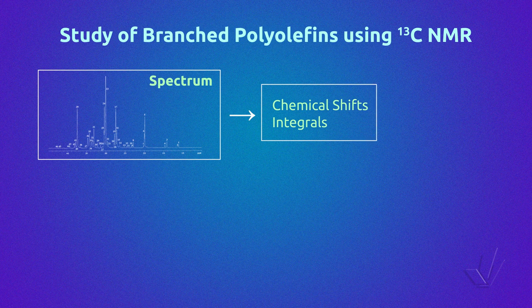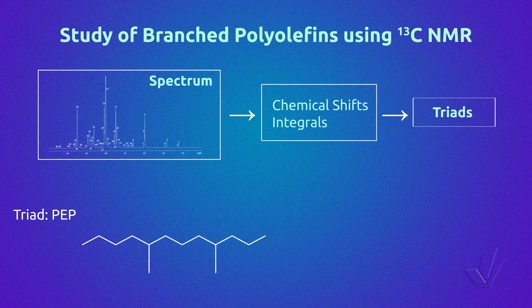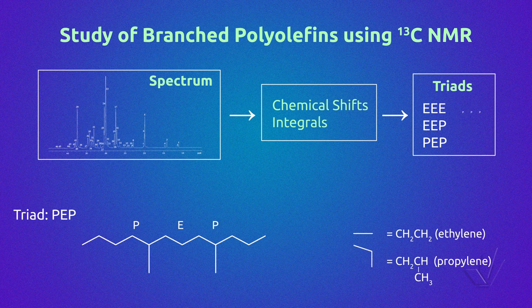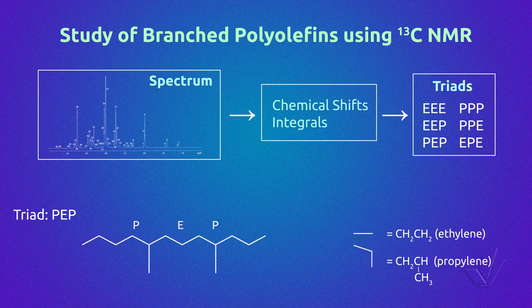From them we can obtain the triad sequences of a copolymer. For example, in an ethylene-propylene copolymer where the ethylene unit is represented by E and the propylene unit by P, there exist six possible triads — six combinations of three units. There are three triads centered in E and three triads centered in P.